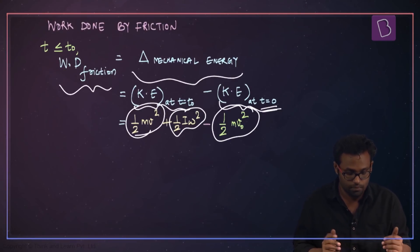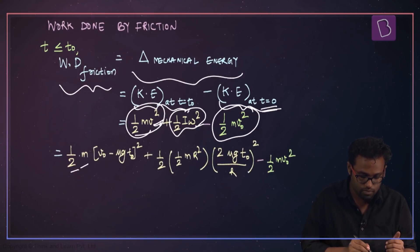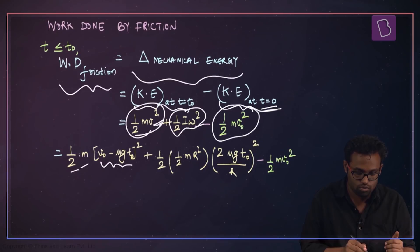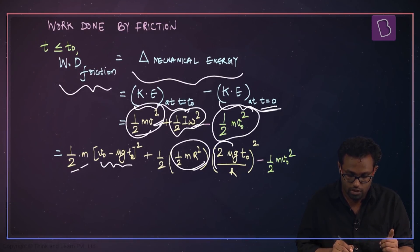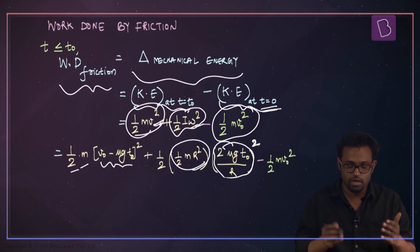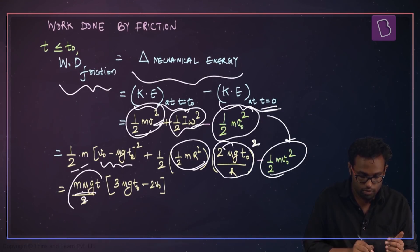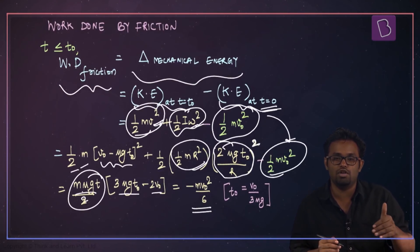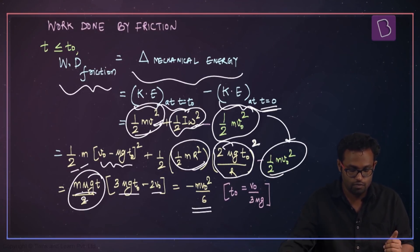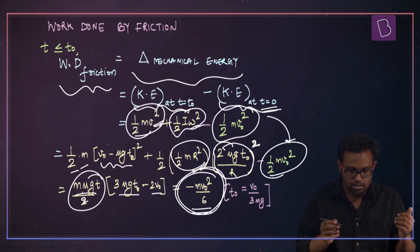At t equal to zero it just had linear velocity v₀. Plugging in: (1/2)m(v₀ - μg·t₀)² plus (1/2)(1/2)mr²(2μg·t₀/r)² minus (1/2)mv₀². Taking out common factors of m, μg, and t, and substituting t₀ equals v₀/(3μg), this simplifies to 3μg·t₀ minus 2v₀ giving a total work done equal to minus mv₀²/6.